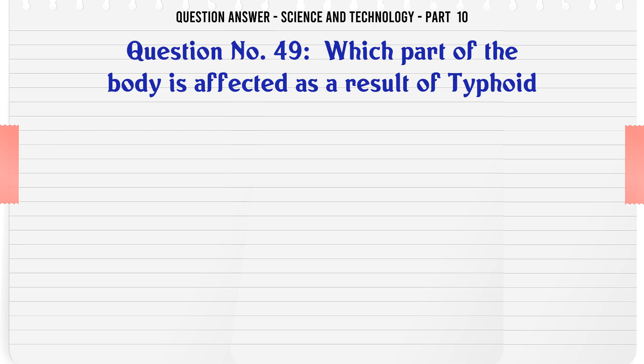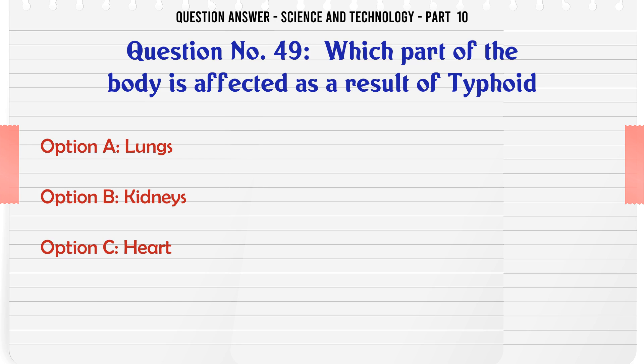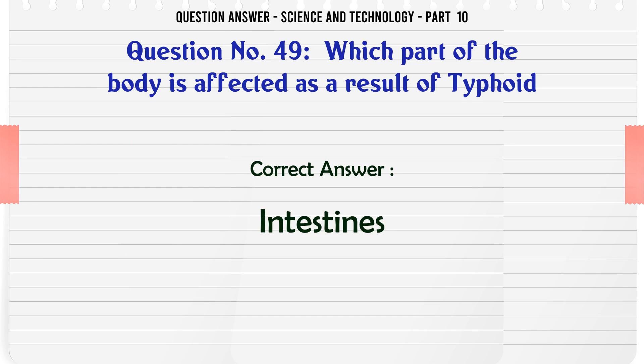Which part of the body is affected as a result of typhoid? A. Lungs. B. Kidneys. C. Heart. D. Intestines. The correct answer is Intestines.